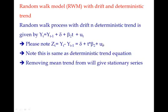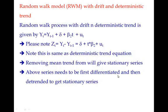Essentially you're left with the error term and that's how the series becomes stationary. Above series needs to be—a random walk process with drift and deterministic trend—you need to first differentiate it and then you need to detrend it to make it stationary.